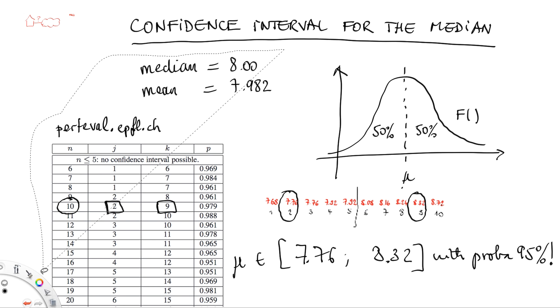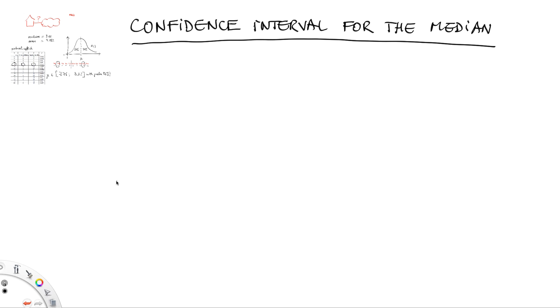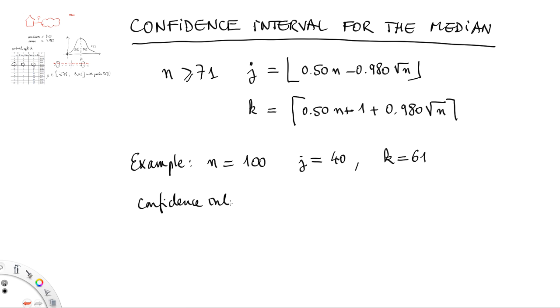We have seen how to compute the confidence interval for the median when n is small using the table. If n is larger than some value, 71, instead of going to a table, we can use a closed form formula. If we want to be sure with probability 95%, we compute j and k, which are the integer approximations of the formulas given here. j is obtained by rounding to the nearest integer below and k to the nearest integer above. For example, for n equals 100, we find j equals 40 and k equals 61.